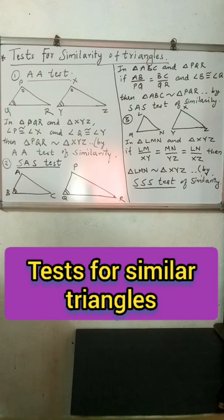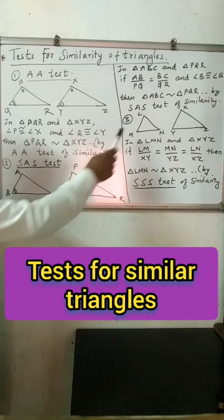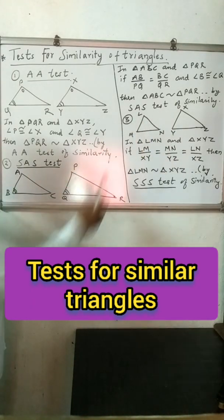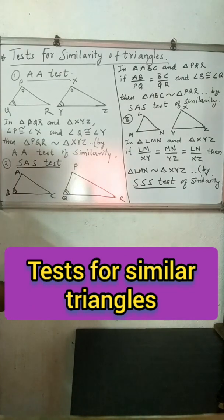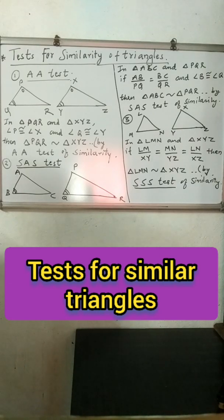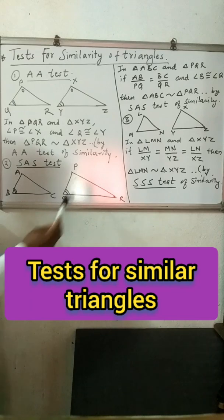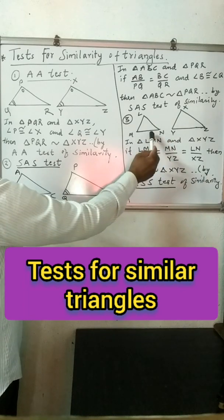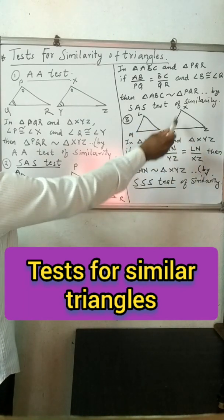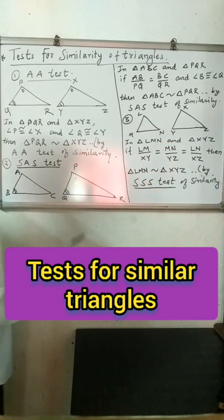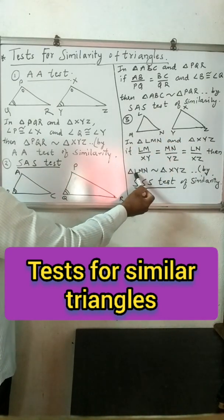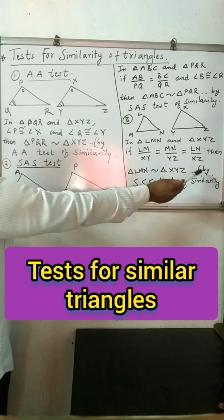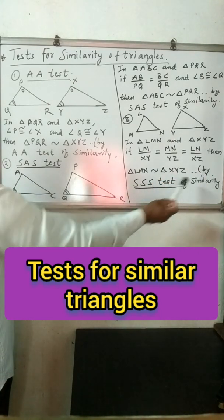The last test is Side-Side-Side (SSS). For 1-to-1 correspondence, all three pairs of sides of one triangle are proportional to the corresponding three sides of the other triangle. So LM upon XY equals ML upon YZ equals LN upon XZ. Then these two triangles are similar — triangle LMN is similar to triangle XYZ by the SSS test of similarity.